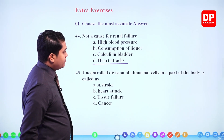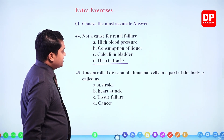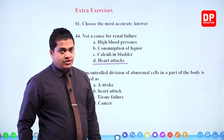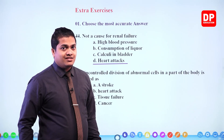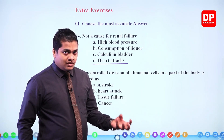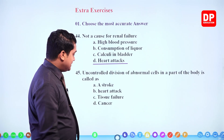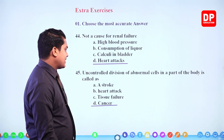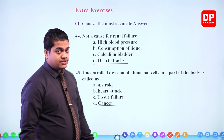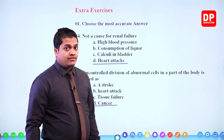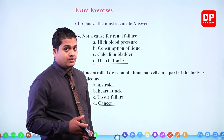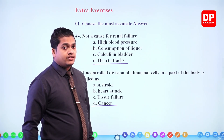Next: uncontrolled division of abnormal cells in a part of the body is called — stroke, heart attack, tissue failure, or cancer. Uncontrolled division means over-mutated cells divide and grow. It is not a stroke, not a heart attack, not tissue failure — it is cancer. If mutated cells keep dividing and multiplying within our body, that situation is referred to as cancer.